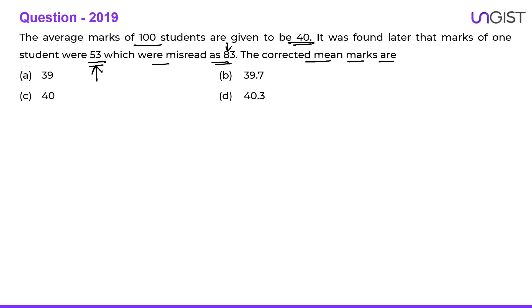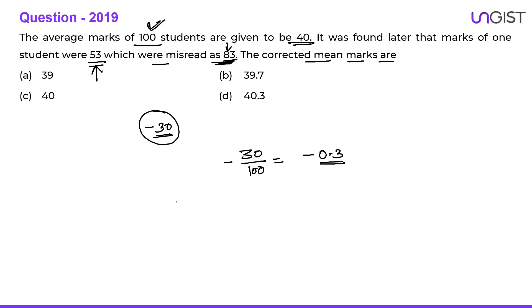So if you rectify this error, you will make 83 back to 53. This is minus 30, so the total will be decreased by 30. If the total is decreased by 30 and there are 100 students, this 30 is distributed equally among 100 students, so every student will get minus 0.3. From the average 0.3 will be subtracted and the new average will be 39.7.